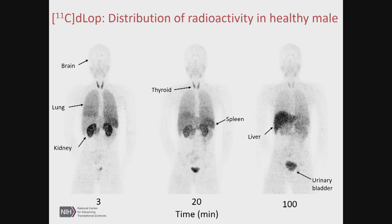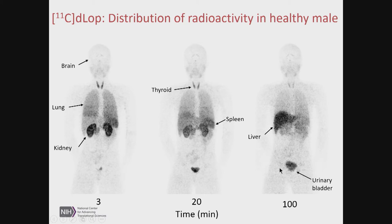Going from animal models into humans, these are side-by-side PET studies at 3 minutes, 20 minutes, and 100 minutes after a patient was injected with D-LOP. The brain shows very low uptake. Below the neck, there's quite high signal in other organ sites: reasonable uptake in the lung, strong kidney signal as the excretory pathway, and as kidney signal goes down, some buildup in the liver from metabolic action, plus increased bladder signal from urinary excretion of the radiotracer through the kidneys.